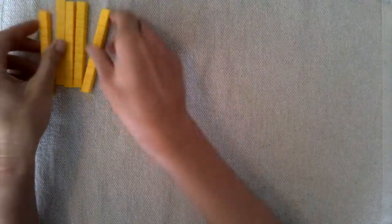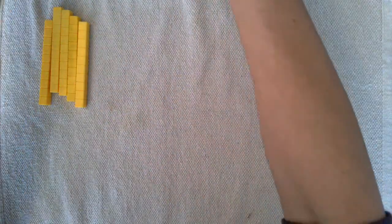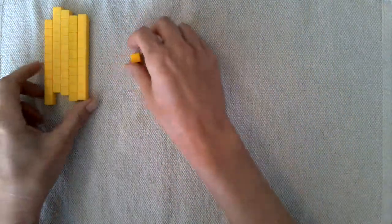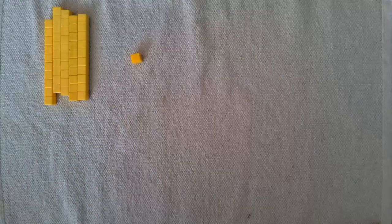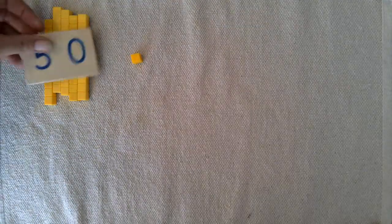Alright, so the first step is to build the minuend, and you can have a child do that in a small group with the blocks. So our minuend is 51, so they'll take five tens and one unit, and then another child can build that same amount with the cards: five tens, one unit. We'll put them together.